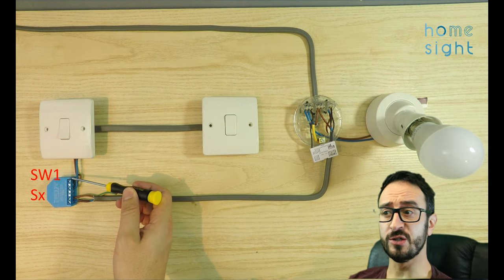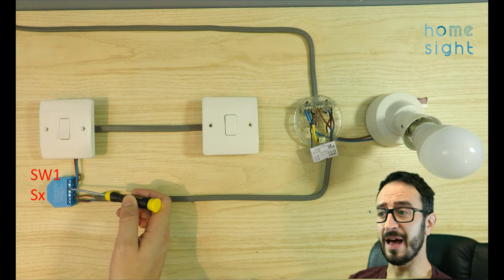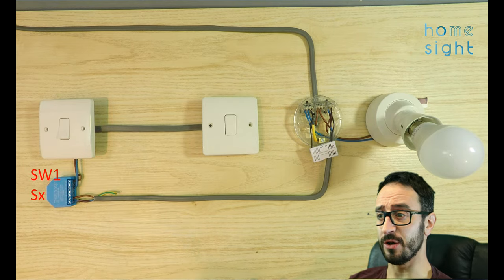So let's show it in real practical terms with a Shelly 1L. Now I mentioned I'm going to show you two ways of doing it. This is the first way. This is using those two-way light switches in exactly the same way as I've just shown you. The second way is only going to be applicable for the Shelly 1L because that has two inputs.